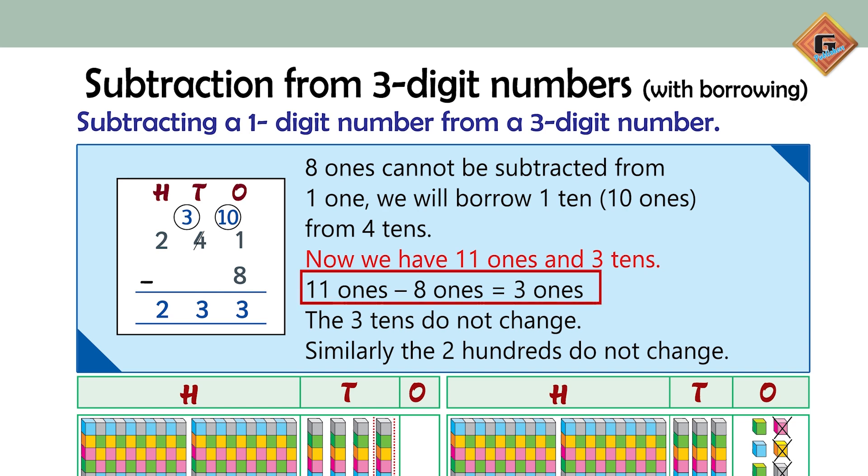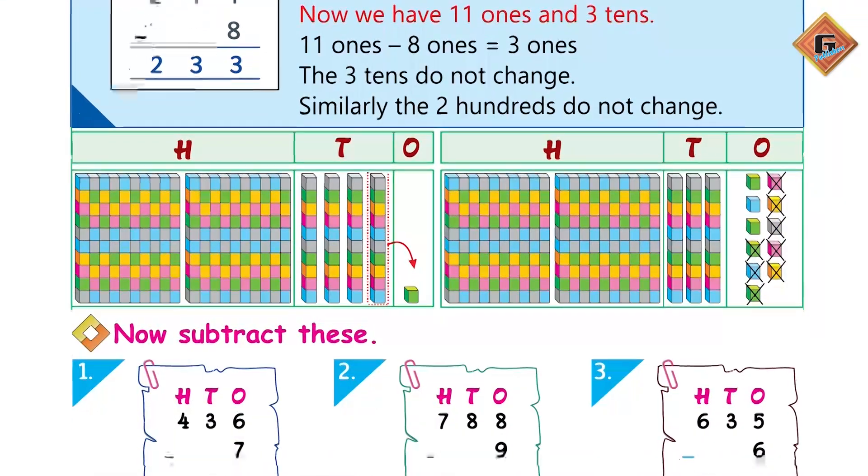We will borrow 1 ten from 4 tens. Now we have 11 ones and 3 tens. 11 ones minus 8 ones is equal to 3 ones. The 3 tens do not change. Similarly, the 2 hundreds do not change.